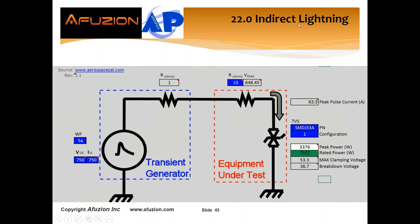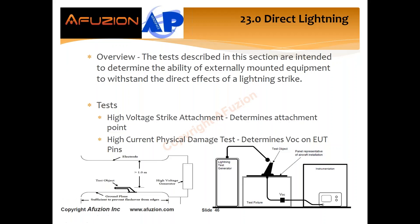Section 23 — direct lightning — is for externally mounted products. This is a lightning strike directly on your product, which can melt it. You're not required to operate during this test — it's really a damage test that looks at what voltages or currents will be induced on your lines. The high voltage strike attachment test determines where a lightning strike would typically couple to, and the high current physical damage test typically monitors your open circuit voltage, with aircraft manufacturers sometimes wanting to see current as well.